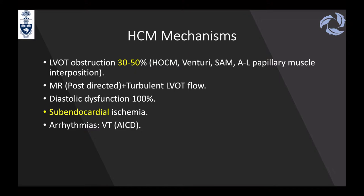When LVOT obstruction occurs, the anterior mitral valve leaflet is sucked into the LVOT, generating a posteriorly directed mitral regurgitation jet that can be moderate or severe. This produces turbulent flow in the LVOT with an intermittent color pattern showing flow acceleration. There is always diastolic dysfunction, and subendocardial ischemia predisposes these patients to arrhythmias, including ventricular tachycardia, often requiring ICD implantation.